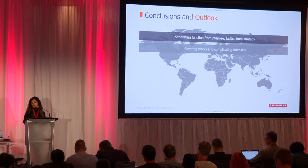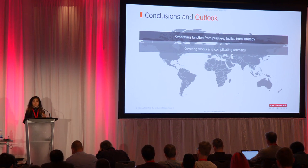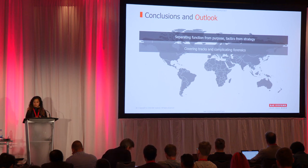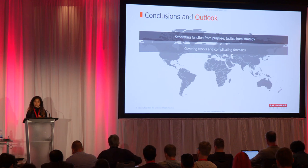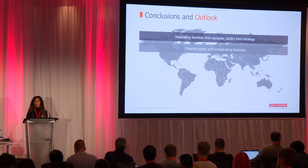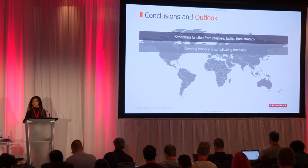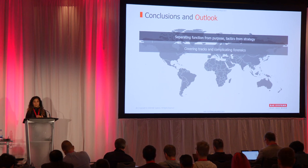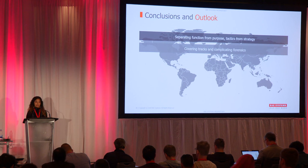On covering tracks and complicating forensics: you see this with Flame, and also with Lazarus, where the diversion aspect comes in. They're very careful to wipe their logs and traces of their presence on the network. One thing that makes investigations of Lazarus complicated is their presence on the network for several months — much more stealthy — and then the cleanup is also very good, comparable to Flame in that way.